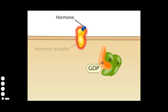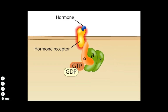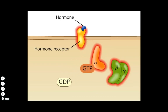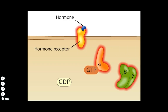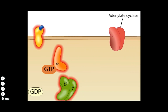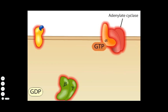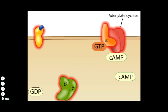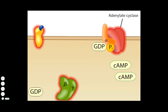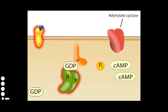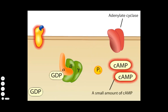When a hormone activates an appropriate receptor, the activated receptor can activate the G protein, allowing it to release GDP and take up GTP. The alpha subunit separates from the beta and gamma subunits. The activated alpha subunit can bind to and activate adenylate cyclase. Activated adenylate cyclase converts ATP to cyclic AMP. The G protein alpha subunit has a GTPase activity and soon cleaves GTP to form GDP, thereby inactivating itself and adenylate cyclase. The G protein complex reforms and only a small amount of cyclic AMP has been made.